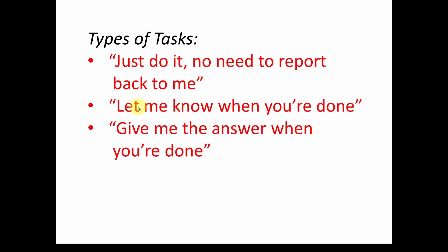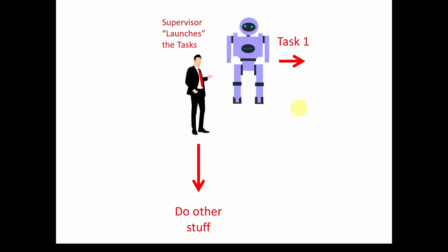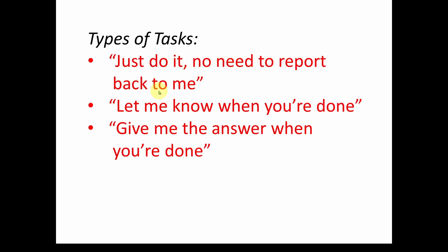Another type of task is: let me know when you're done. You go do it, but I need to be notified when you're done, because maybe your completing that task allows me to start another task that relies on that door being open. Or maybe the task is to build a computer from parts, and when you're done I need to tell somebody else to go get that computer. So either it's a just-do-it with no feedback, or notify me when you're done because I need to act on your completion.